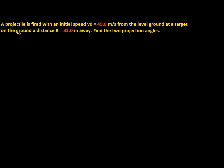We have this problem of a projectile that is being fired with an initial speed of V₀ at 49 meters per second from level ground at a target on the ground, a distance r equals 33 meters away. Find two projection angles.